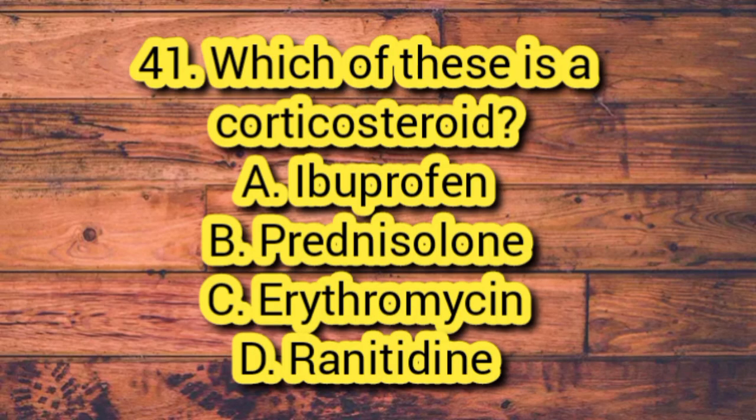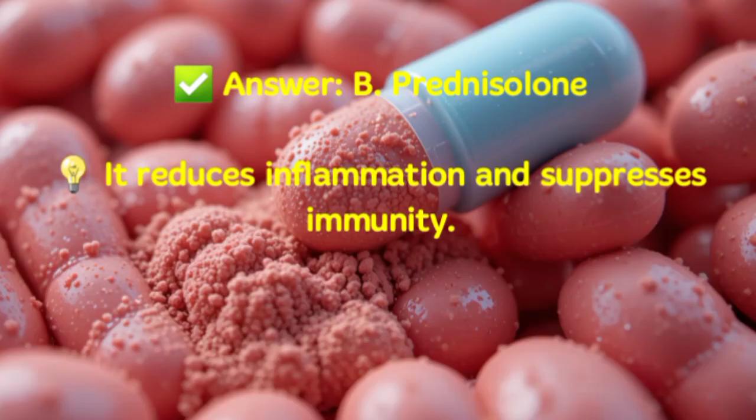Question 41. Which of these is a corticosteroid? A. Ibuprofen. B. Prednisolone. C. Erythromycin. D. Ranitidine. Answer: B. Prednisolone. It reduces inflammation and suppresses immunity.